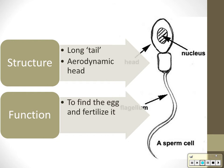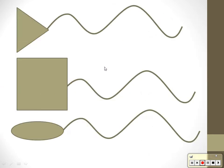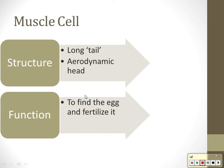The structure and function of a sperm cell: its function is to find and fertilize the egg. So it has a tail that can move, and a head that allows it to move through the water gracefully. Imagine if the sperm's head was big and square — it wouldn't get very far.